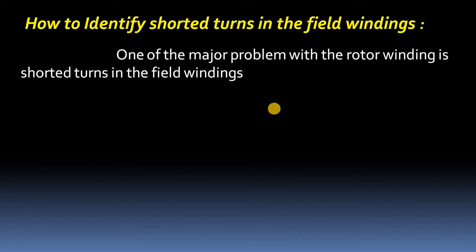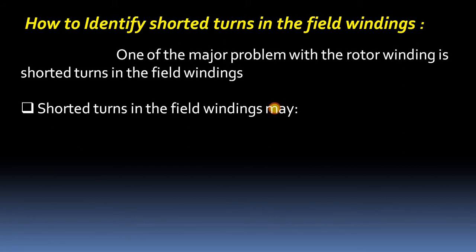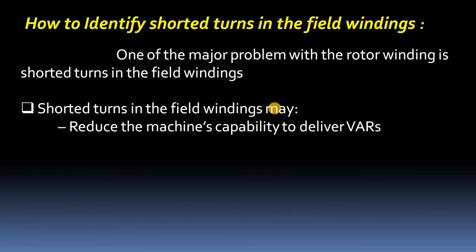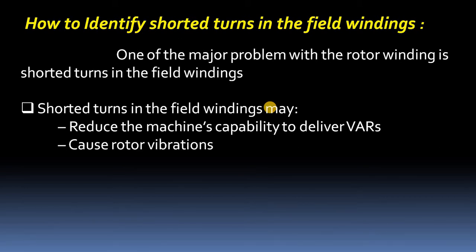Shorted turns in the field winding may reduce the machine's capability to deliver VA. If the field pole has shorted turns, that will reduce the net flux generated by the field poles, thereby reducing the machine's capacity to deliver rated reactive power. Shorted turns also cause rotor vibrations.